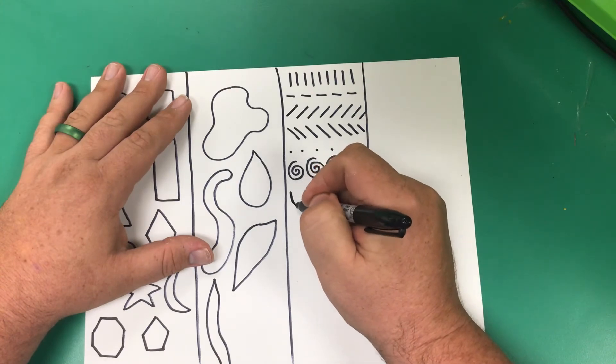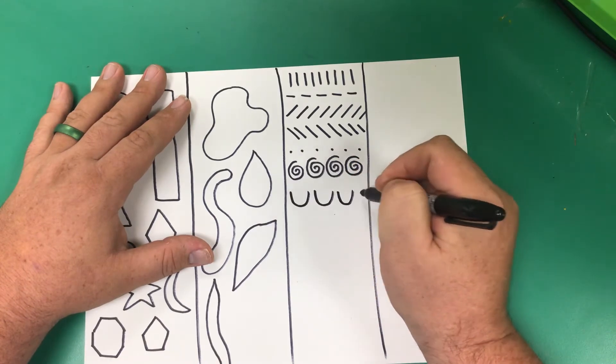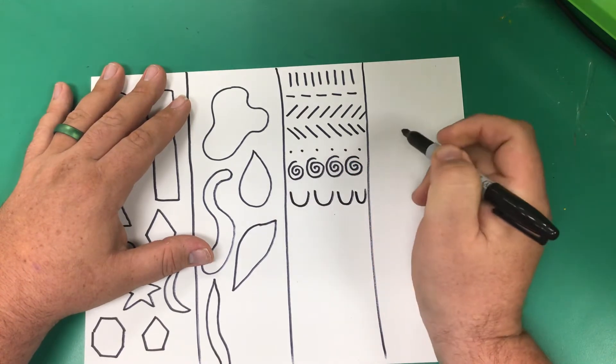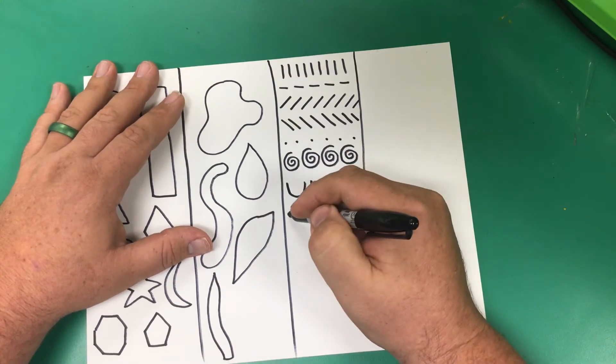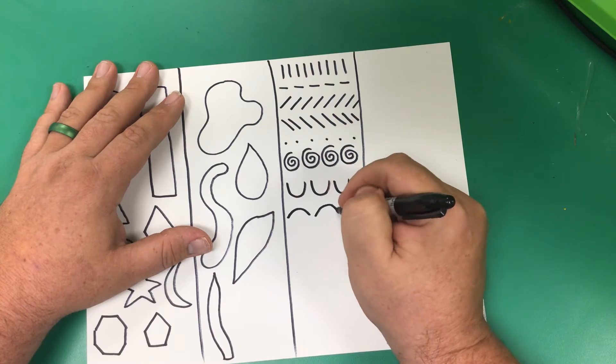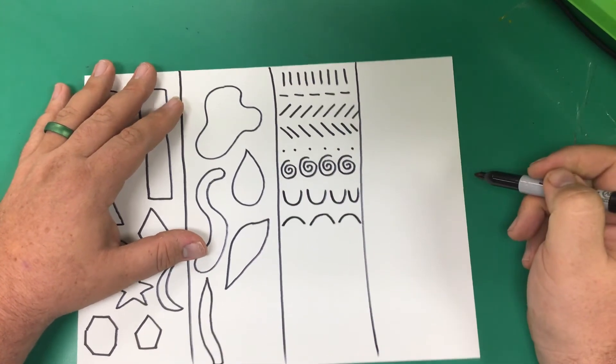All right. Next we'll do up curves. Up curves, they kind of look like U's but they're not quite a U, it's more like a smiley face or the way you guys make smiley faces sometimes. And then we've got down curves, and it's like a rainbow or a sad face.